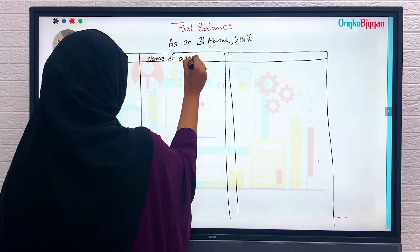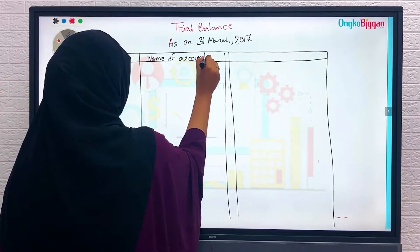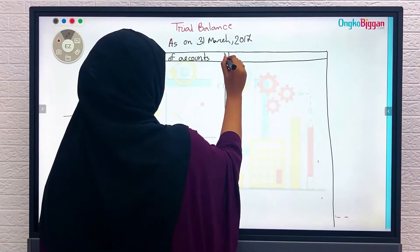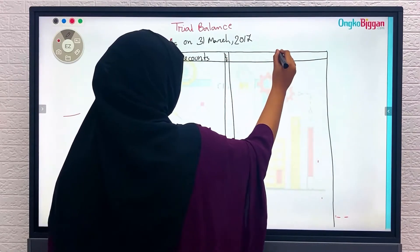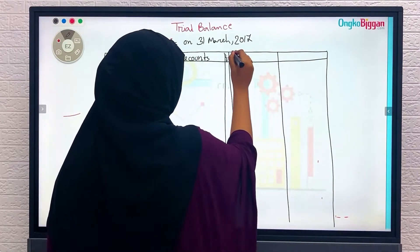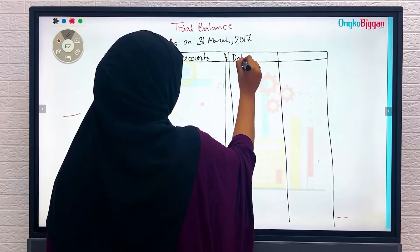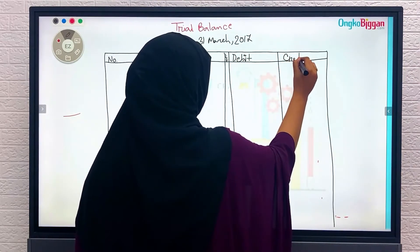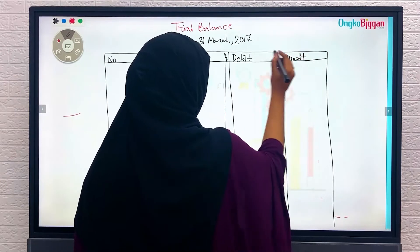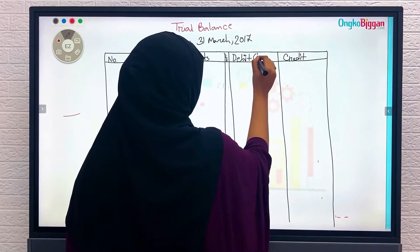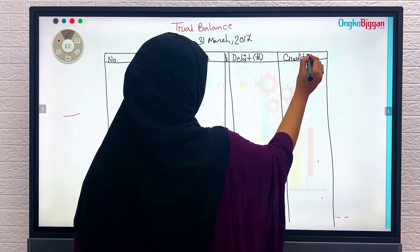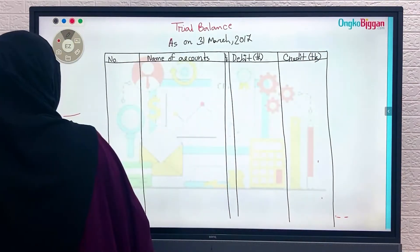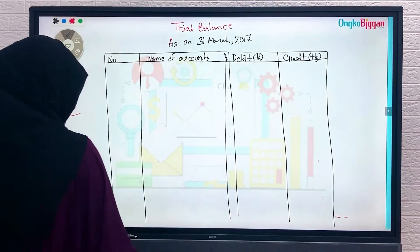We will write 'Name of Accounts,' then LF, and as usual we have two columns — one for debit and another one for credit. In brackets we will write Taka.